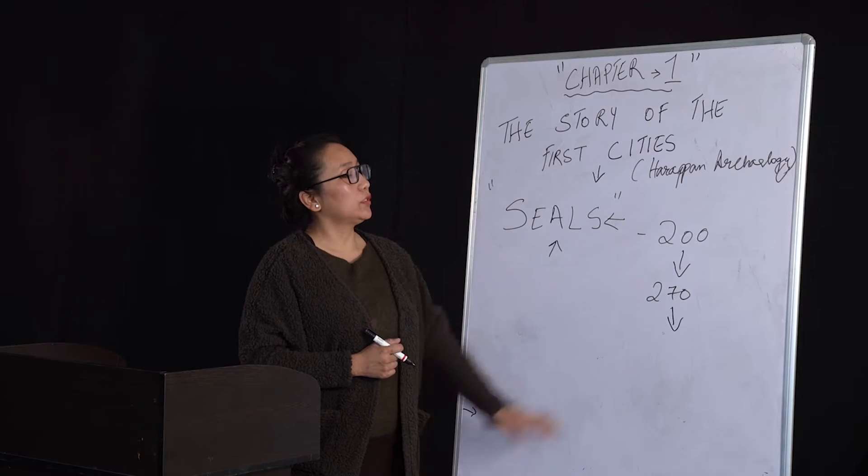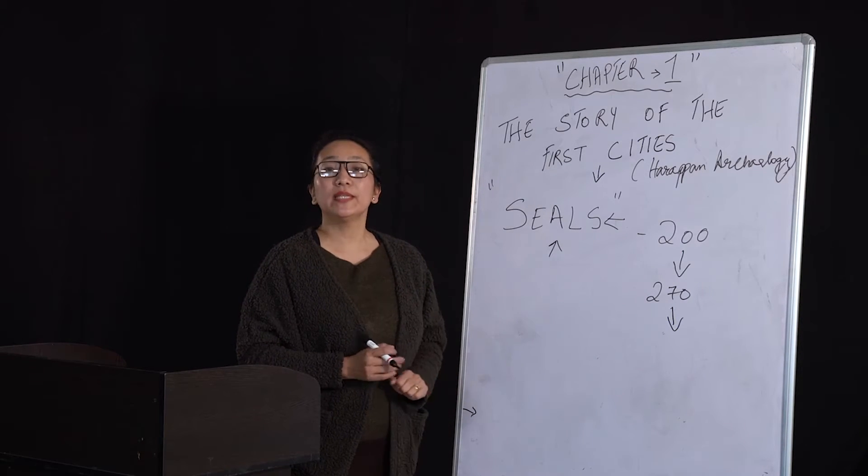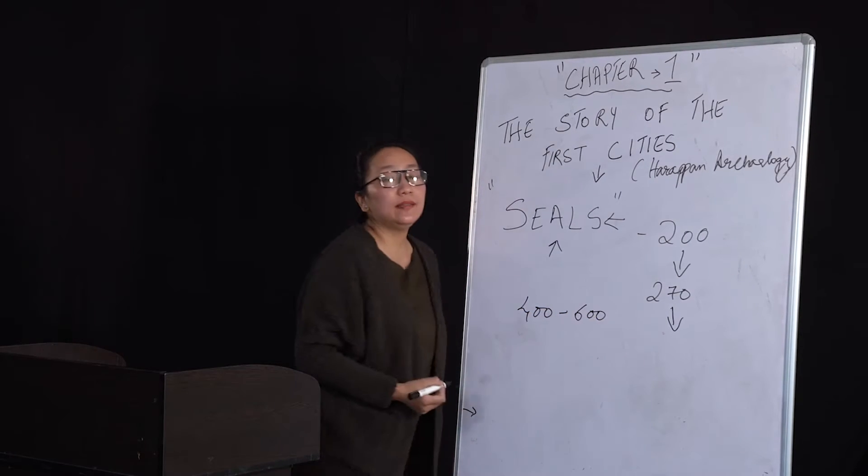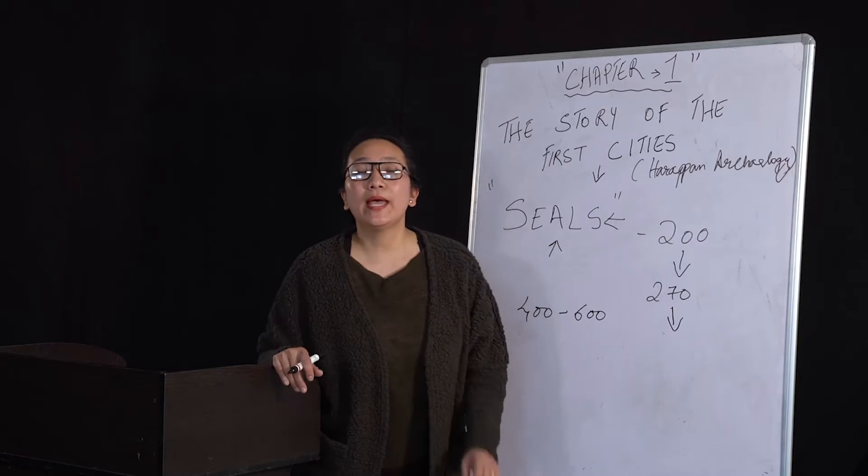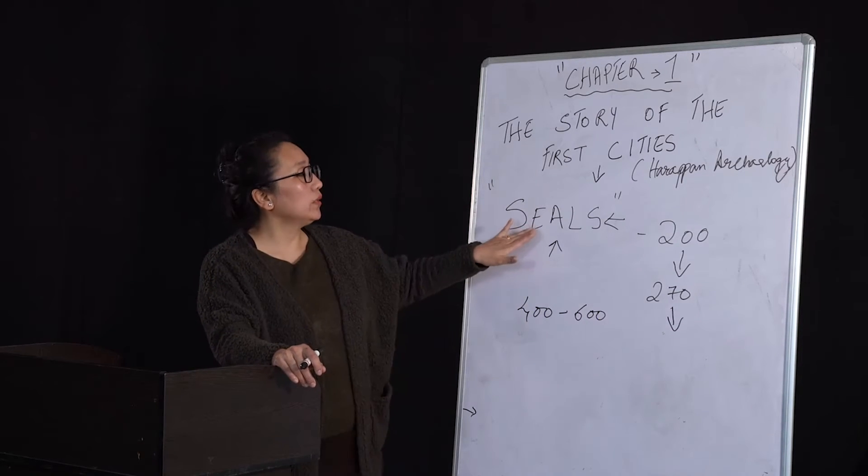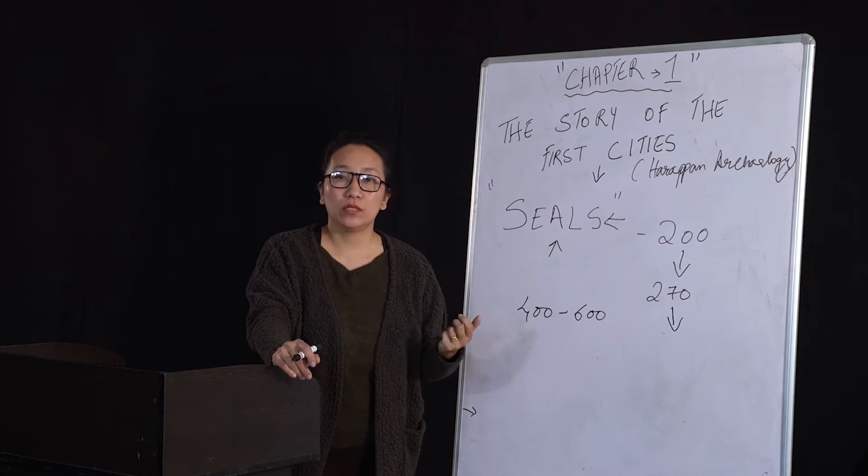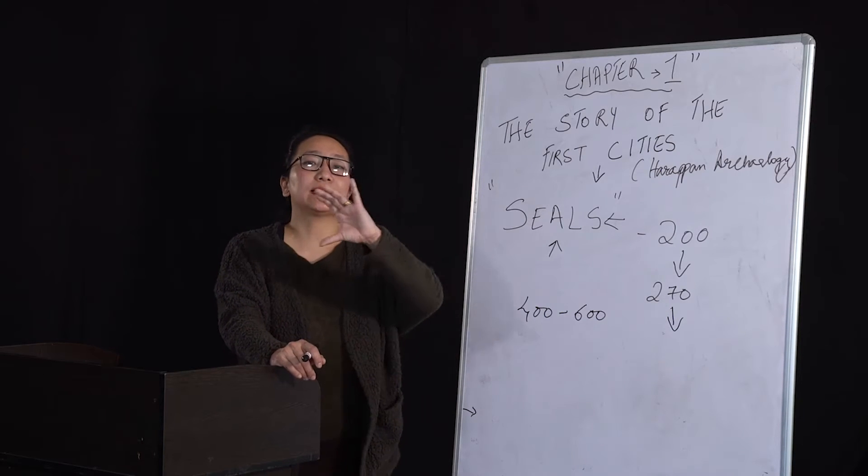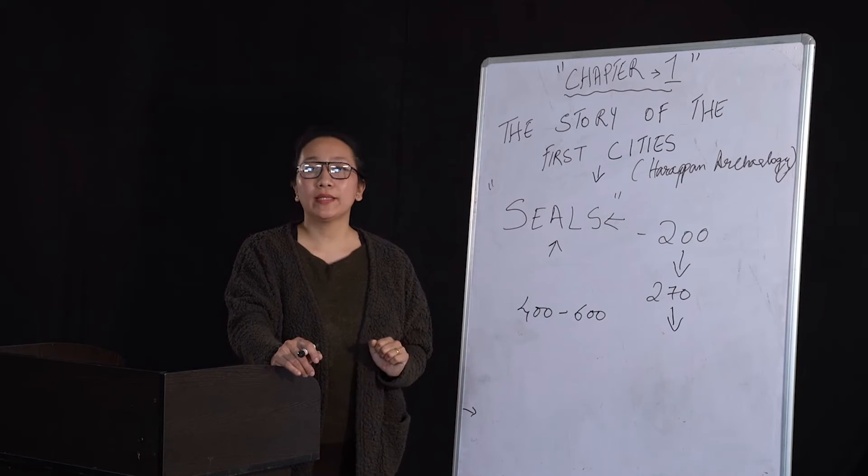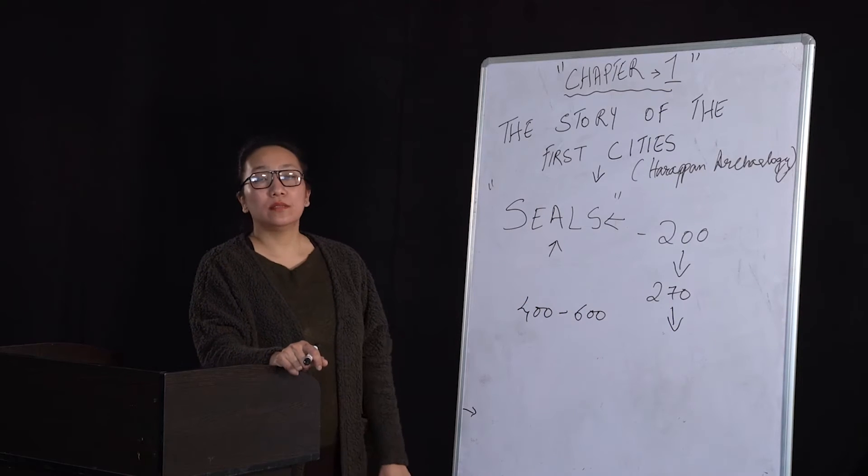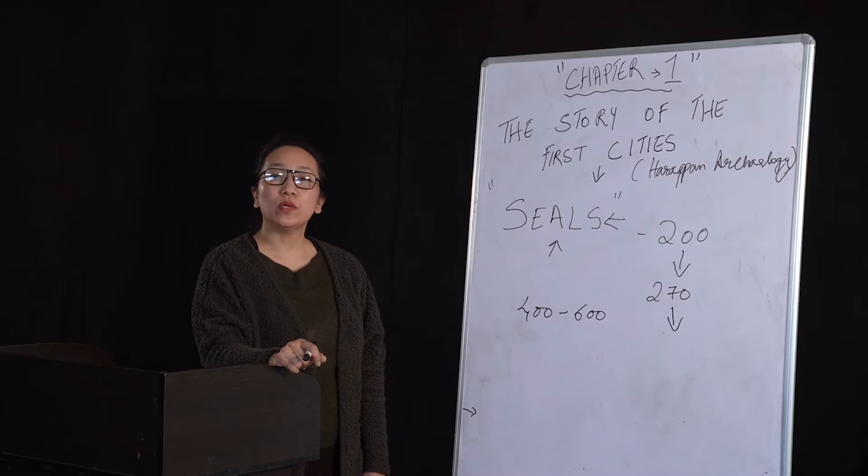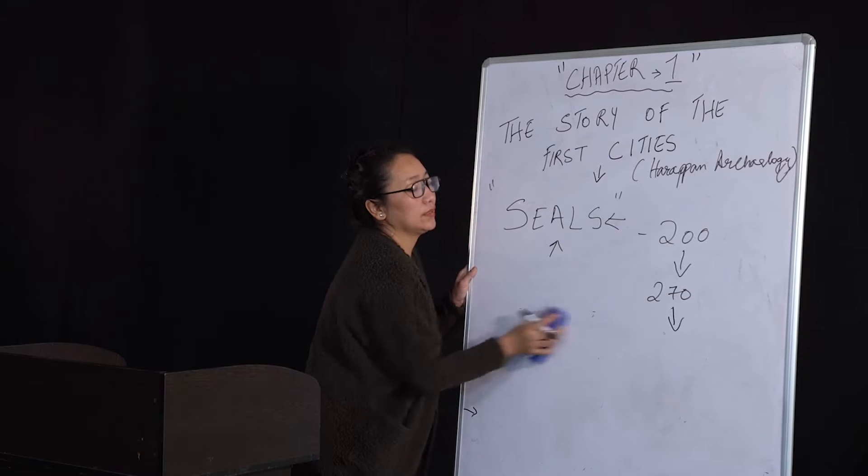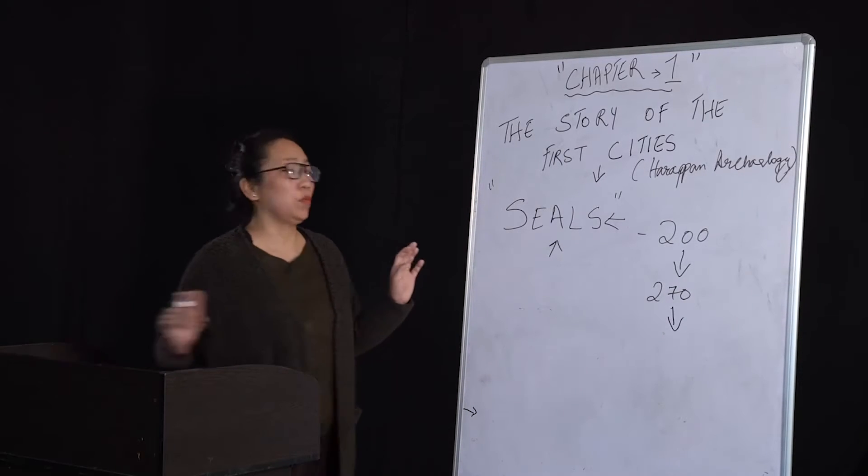Of these 200 seals with 270 distinctive symbols, around 400 to 600 Indus symbols have been discovered, not only in seals but in different terracottas, ceramics, and pottery, which are a kind of sign board that was usually hanged outside the city. Of the many seals discovered, we will see which was the most important. There are three important seals here.